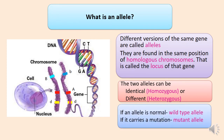If an allele is normal, it's called the wild-type allele. If it carries a mutation or an abnormality, then it's called the mutant allele.